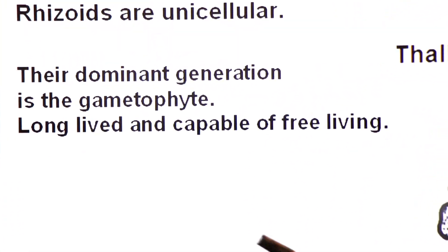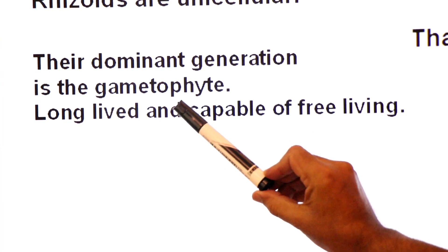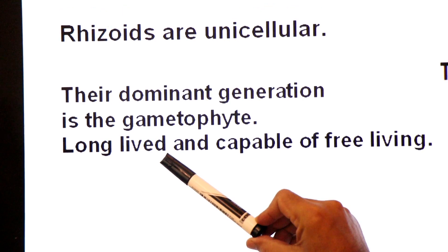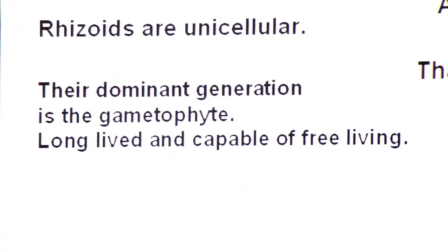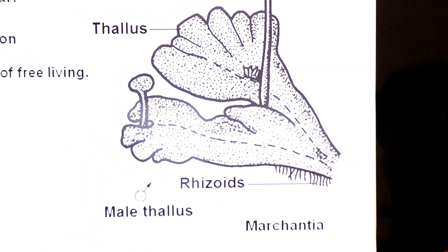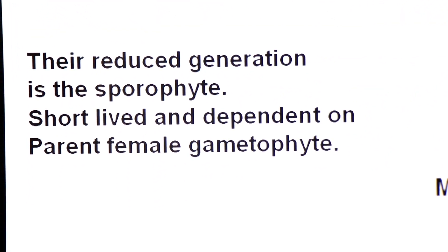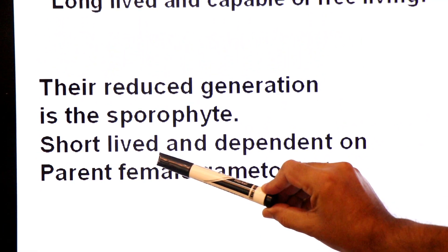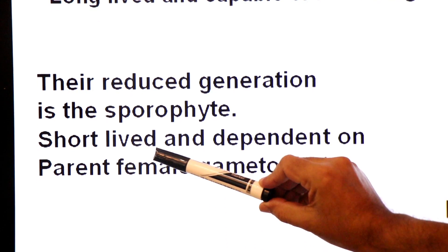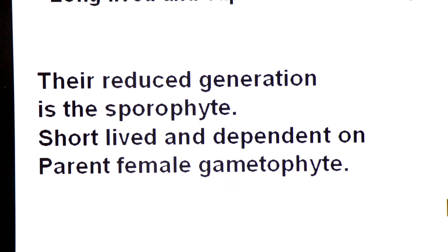The dominant generation is the gametophyte, meaning it is long-lived, occupies the major portion of the life cycle, and is capable of free living. The reduced generation is the sporophyte, which is short-lived, occupies a shorter portion of the life cycle, and is dependent on the parent female gametophyte because it is non-photosynthetic.